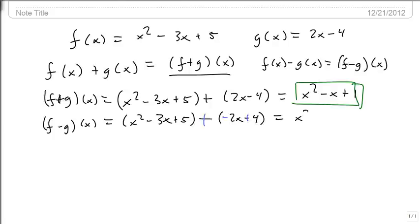And now when we combine like terms, we still have an x squared, but now we have a minus 5x plus 9. And here is our f minus g of x.